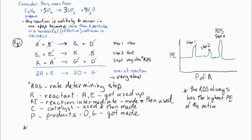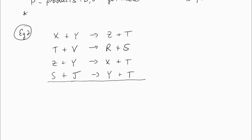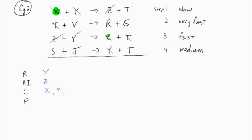Let's try another example. X and Y make Z and T. Say one of those products T reacts with something else and makes some more stuff R and S, for example. Then Z and Y are used to make X and T, and S and J makes Y and T. This is a very complicated one.